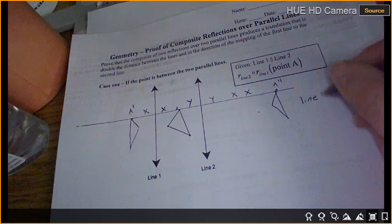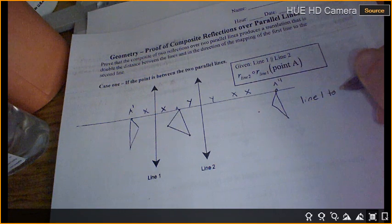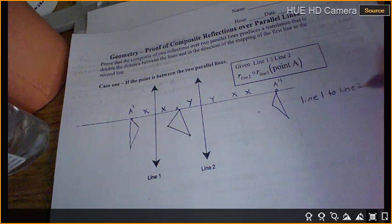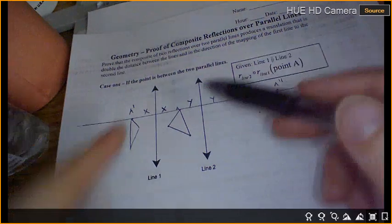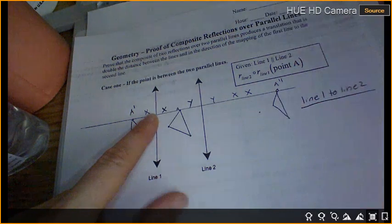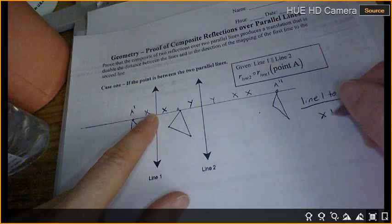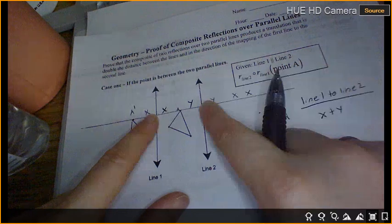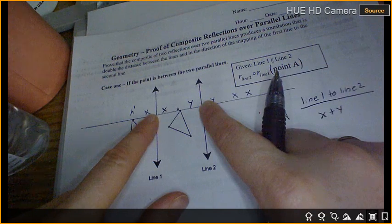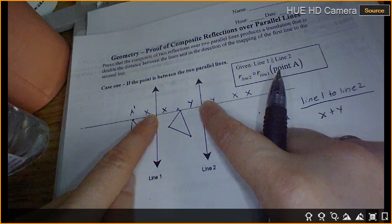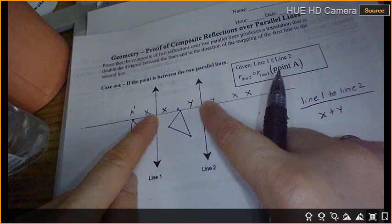What is the distance between line one and line two? We're going to say X plus Y. Because if X and Y were numbers, we'd add them together to get the whole thing. Does that make sense?